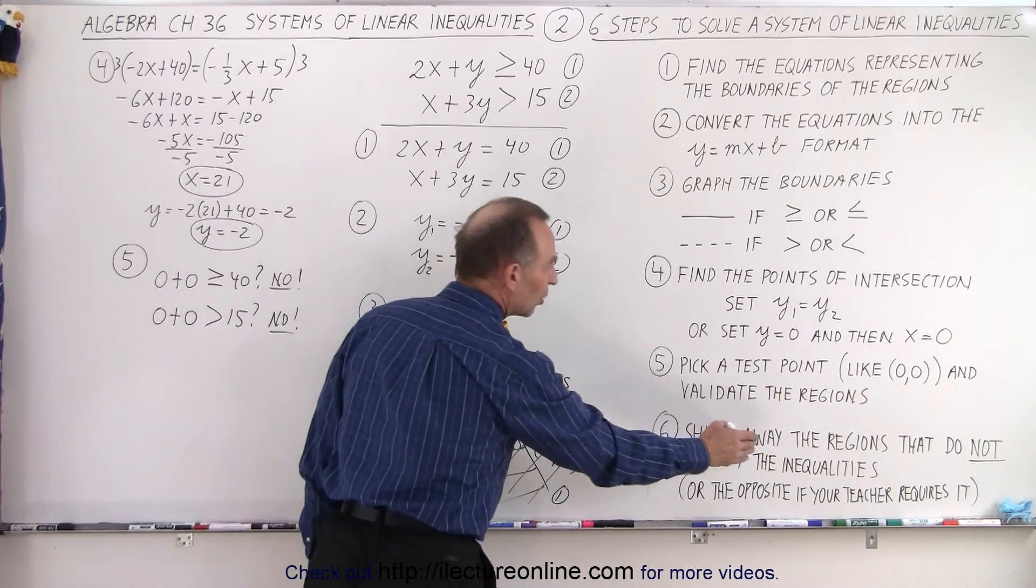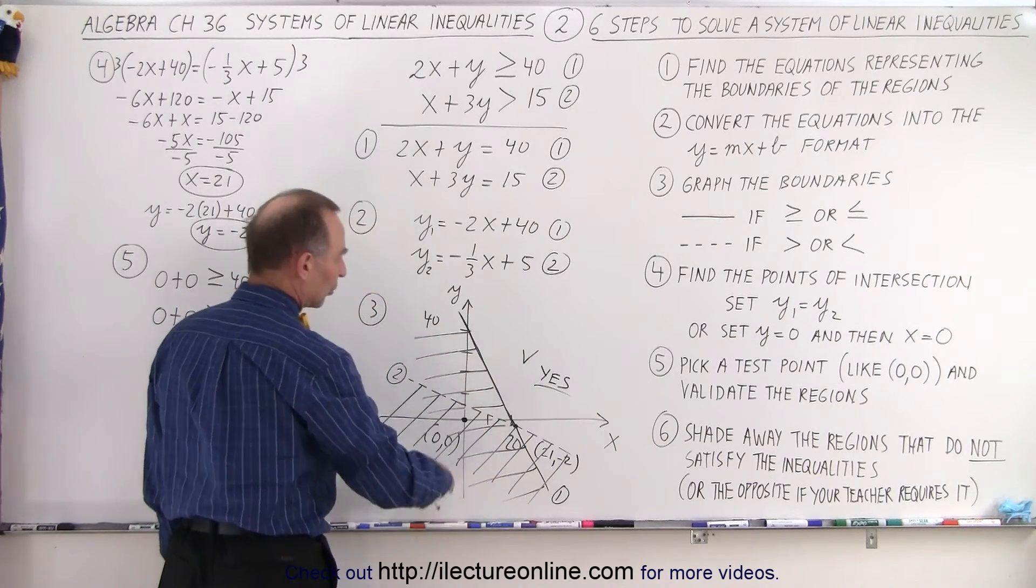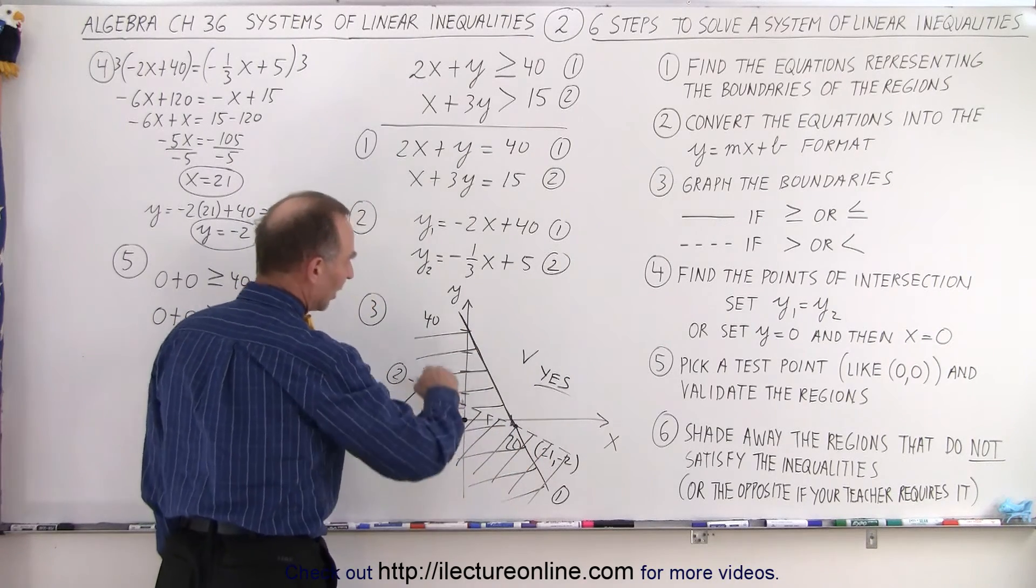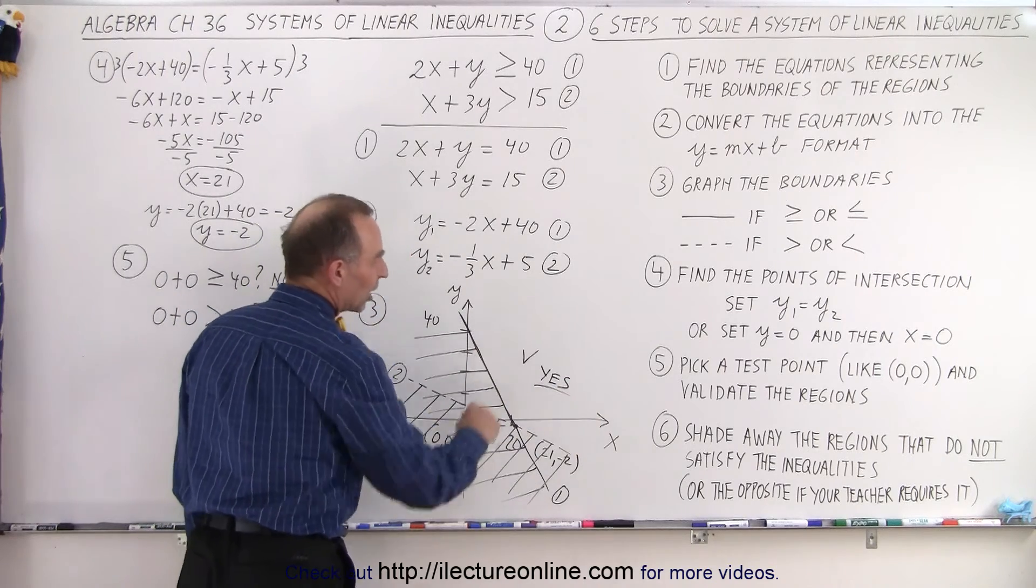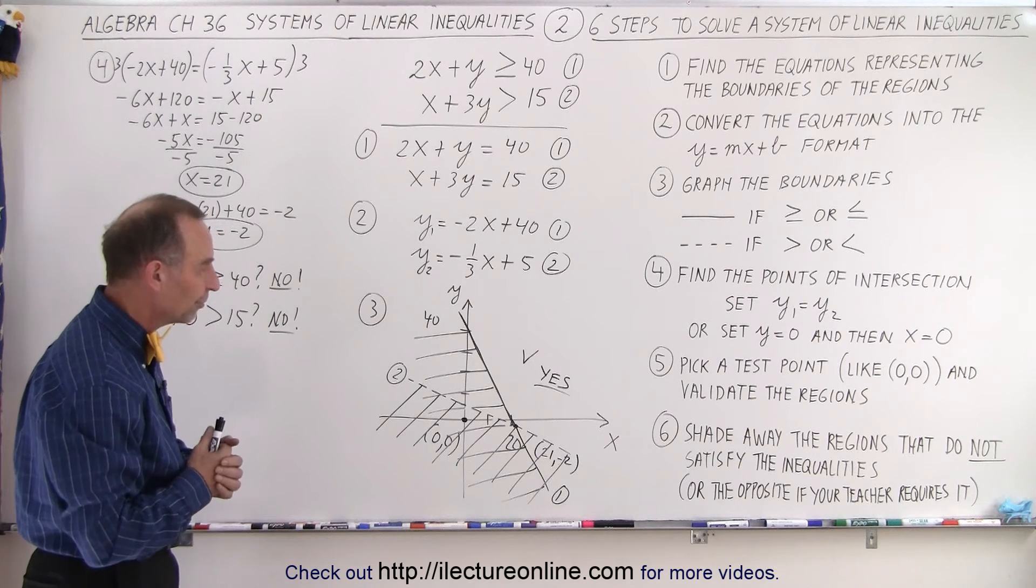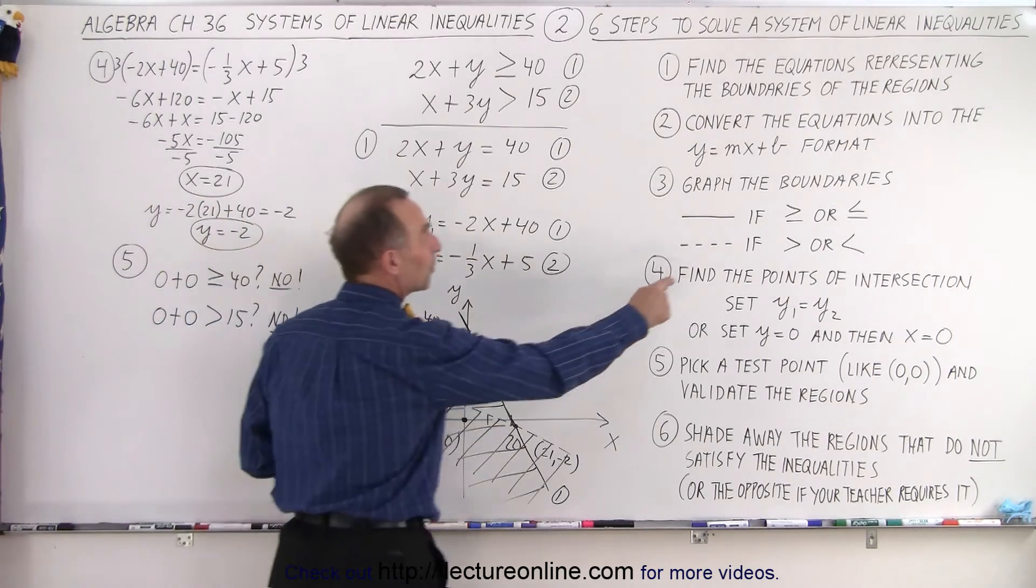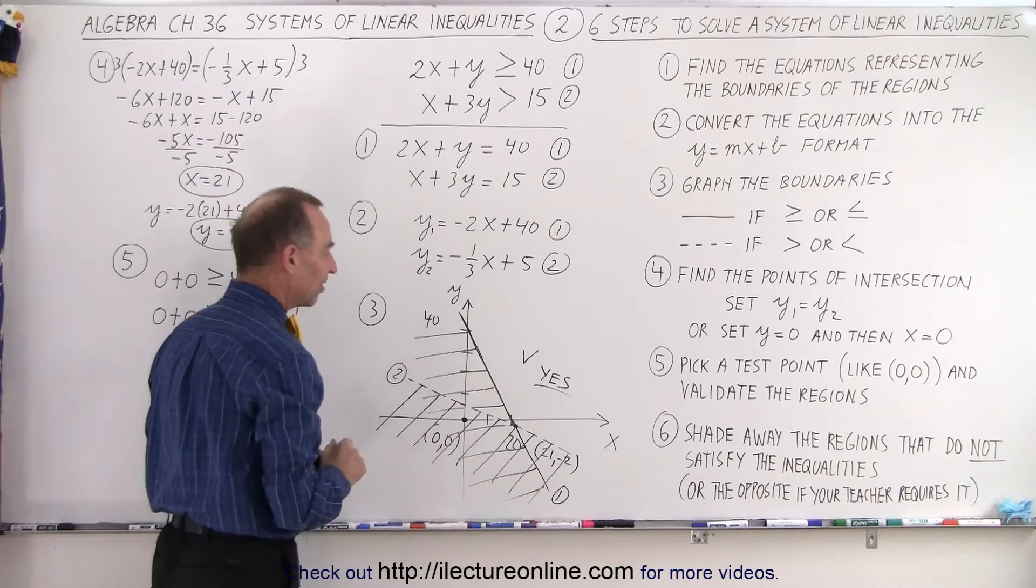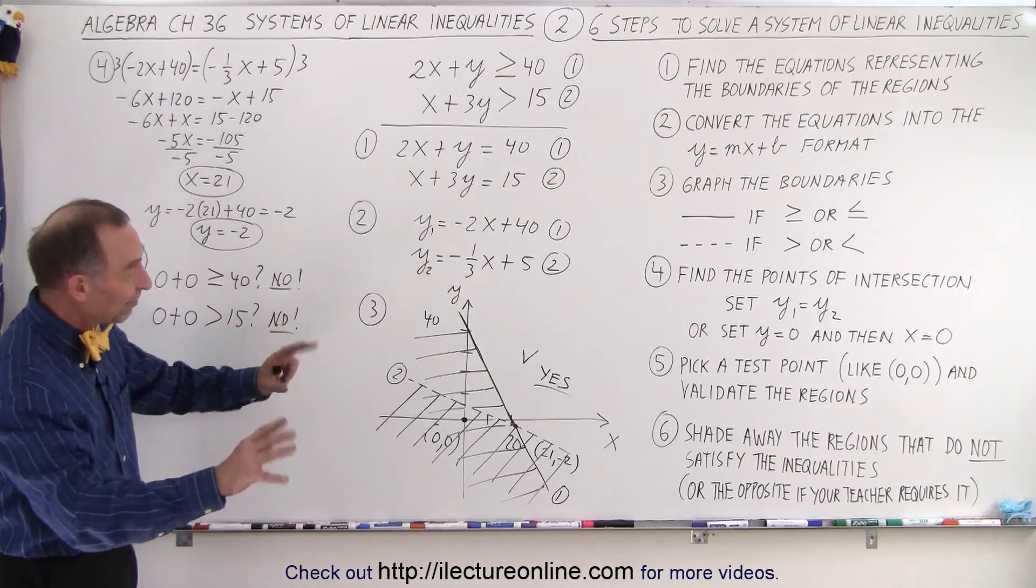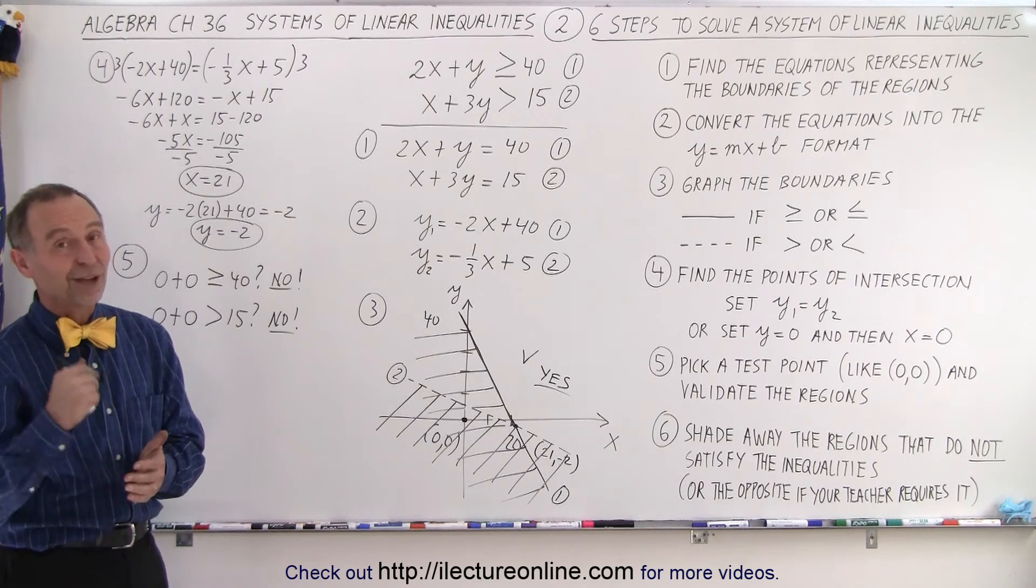So, point number six, we shaded away the regions that do not satisfy. So the left side of line number one, the bottom of line number two, and the only one that's not shaded then becomes the solution to our system of linear inequalities. And so that's how we follow the six steps. Of course, I didn't follow my own step here, make sure that if it's not equal to, that we draw a dashed line instead of a solid line, and then shade away everything that does not belong, and what's left is the region that satisfies both of the inequalities in our initial set. And that is how it's done.